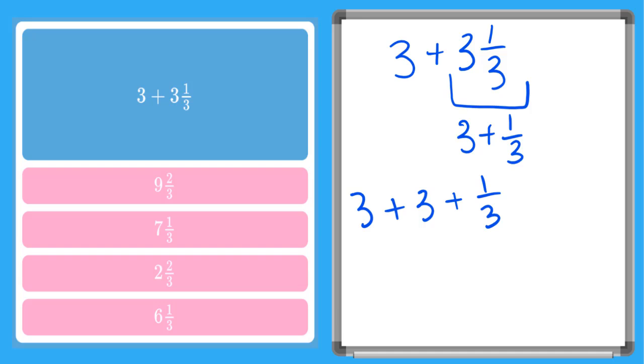Then we can go ahead and start by adding our whole numbers together. 3 plus 3 gives us 6. And then we have to add our 1/3, which we can write as a mixed number, 6 and 1/3. And there's our answer there.